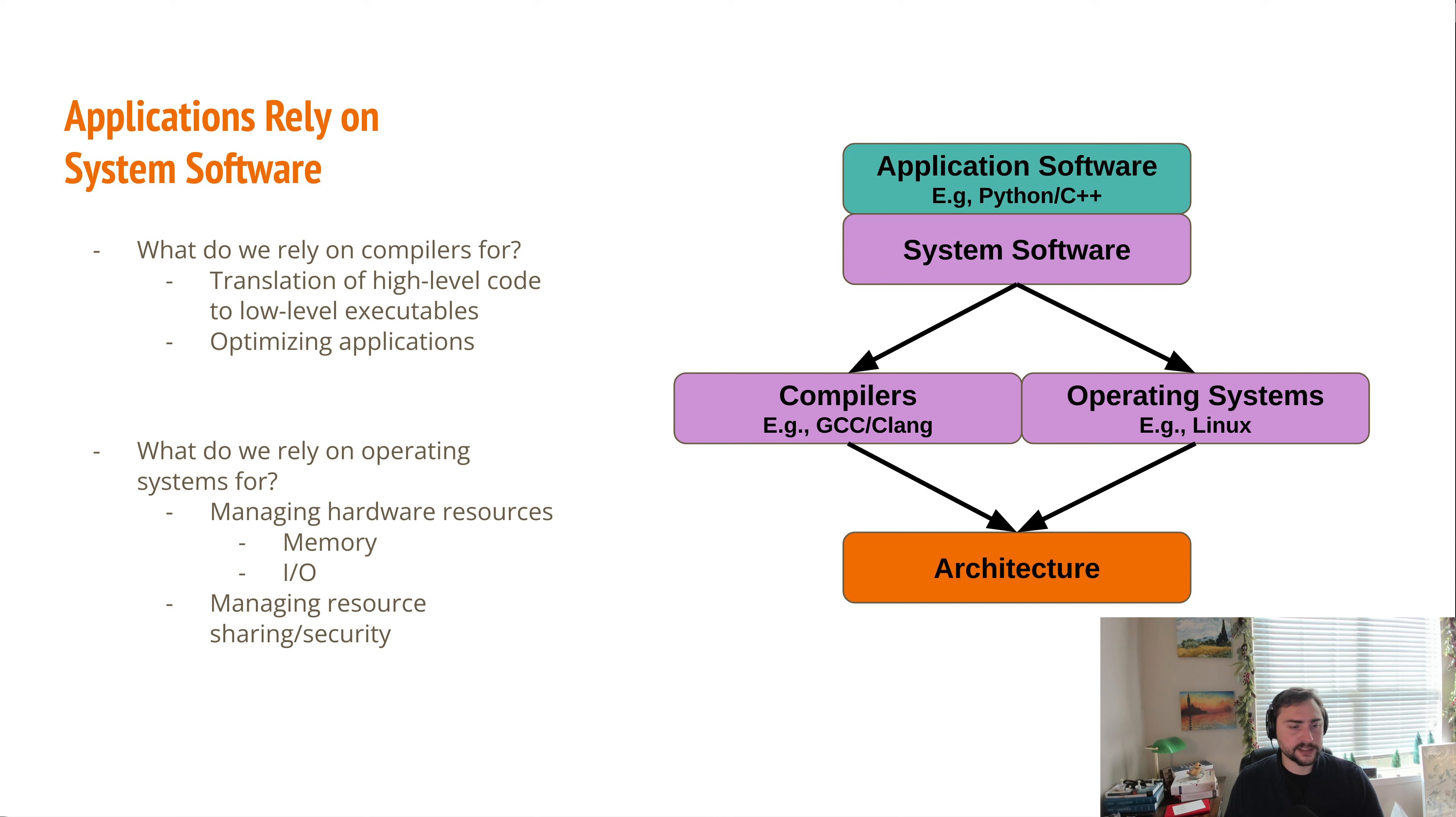Another major thing we rely on compilers for is optimizing our applications. When we're writing application software, we're typically writing this in a very high layer of abstraction, so we're not really thinking about our hardware resources. So we rely on our compilers to efficiently and effectively use all of the underlying instructions and hardware resources that are available to us without us as high-level software developers having to think about those details.